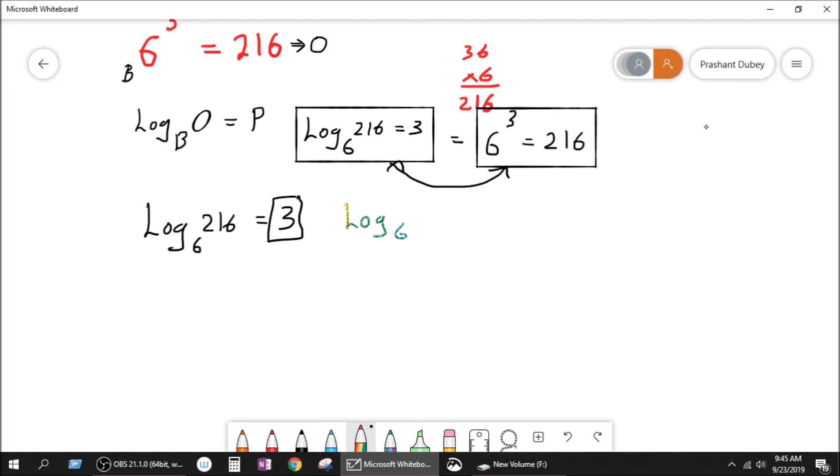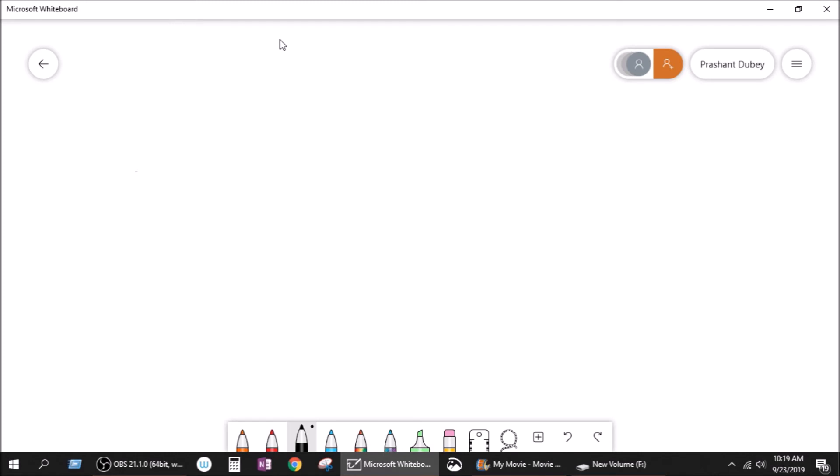Log 6 of 216 is equal to log 216 divided by log 6. Now, if you punch this in your calculator, you will get the value of 3. Now, as I told you earlier, the value of log 216 to the base 6 is equal to 3.